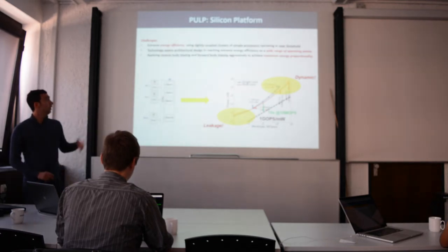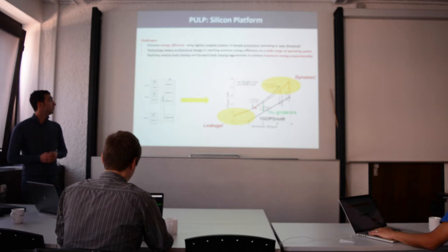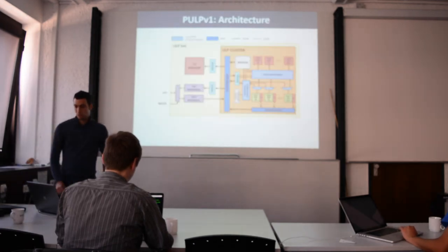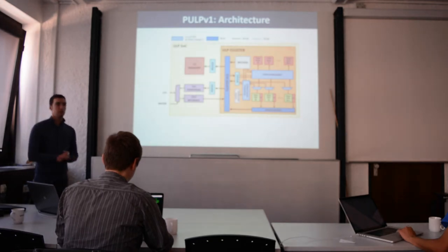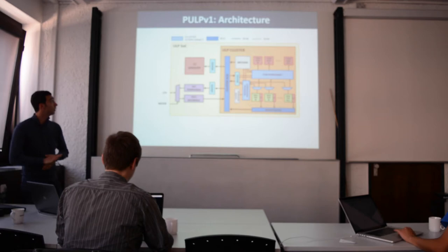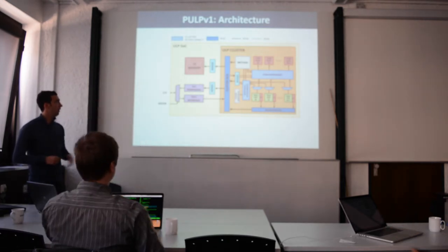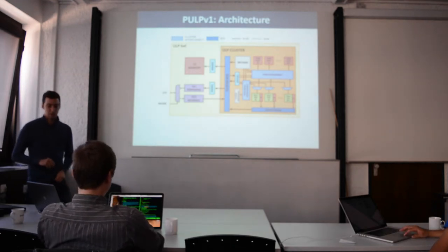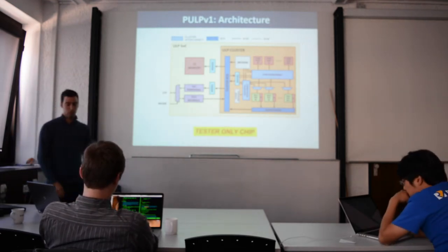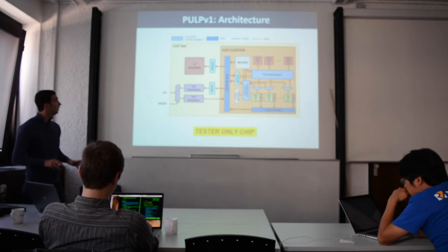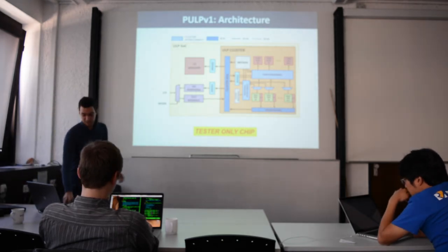We want to achieve this by applying forward body bias and reverse body bias aggressively to increase energy efficiency proportionally. This is the architecture of the first chip, which was taped out last year in December. It is a very simple cluster composed of four processors, eight memory banks, a DMA and a bus infrastructure, and a hierarchical memory. The main purpose of this platform was to explore the technology flavor and see how it behaves. So it was a test-only chip.